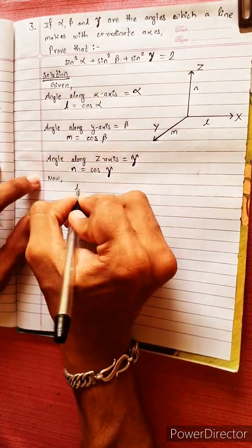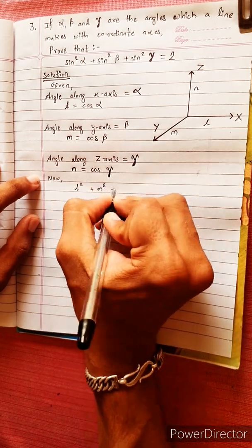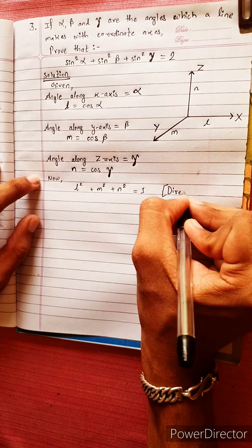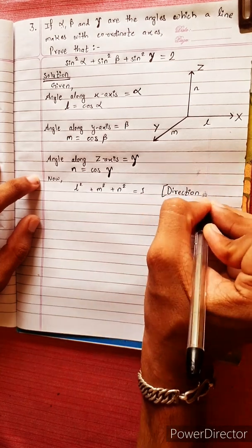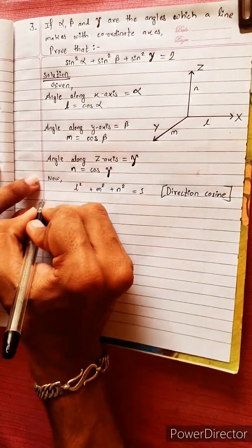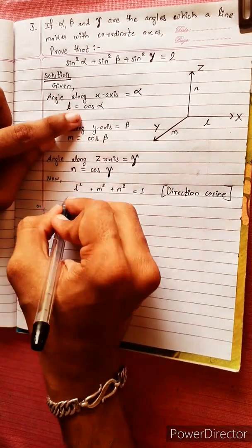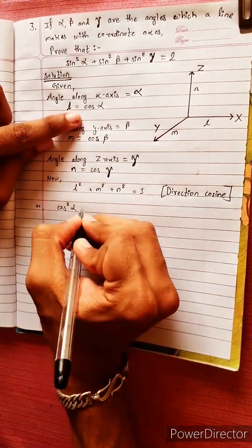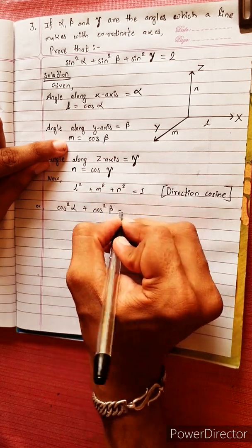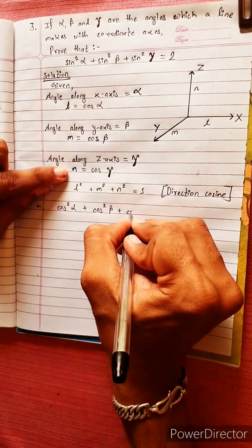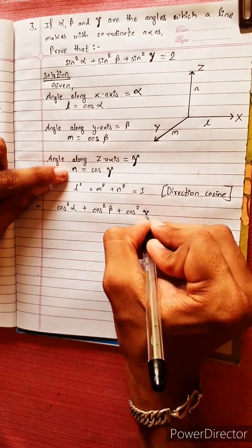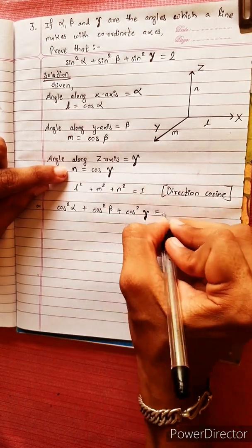Now we have the formula for direction cosines of a line: l² + m² + n² = 1. Substituting, cos²α + cos²β + cos²γ = 1.